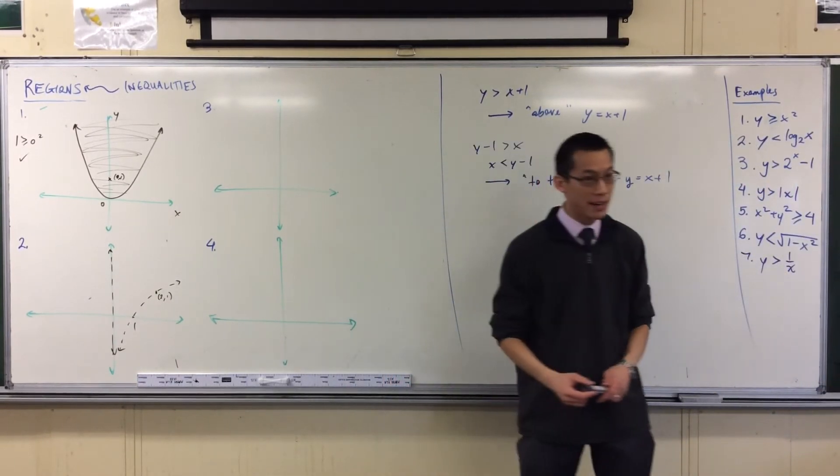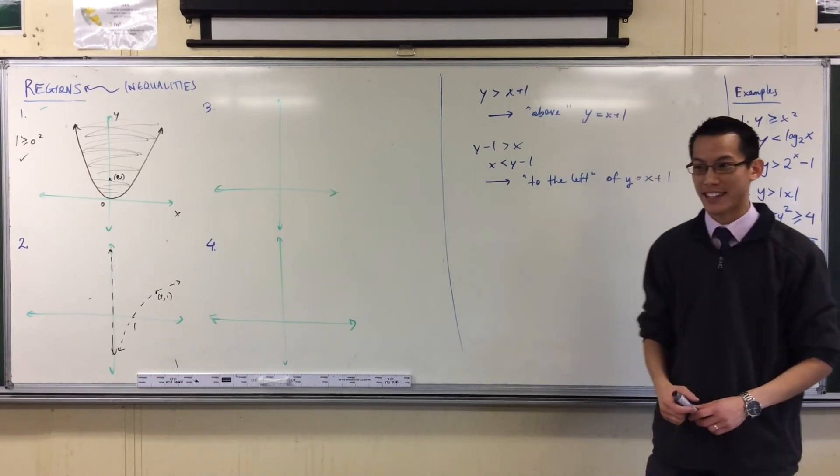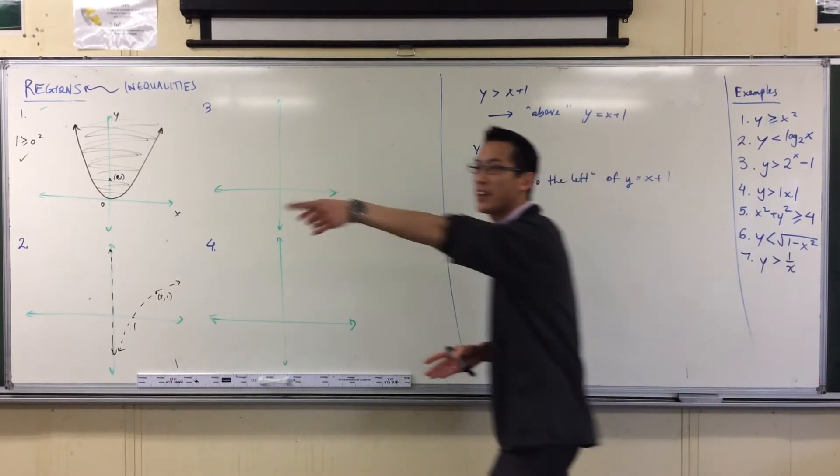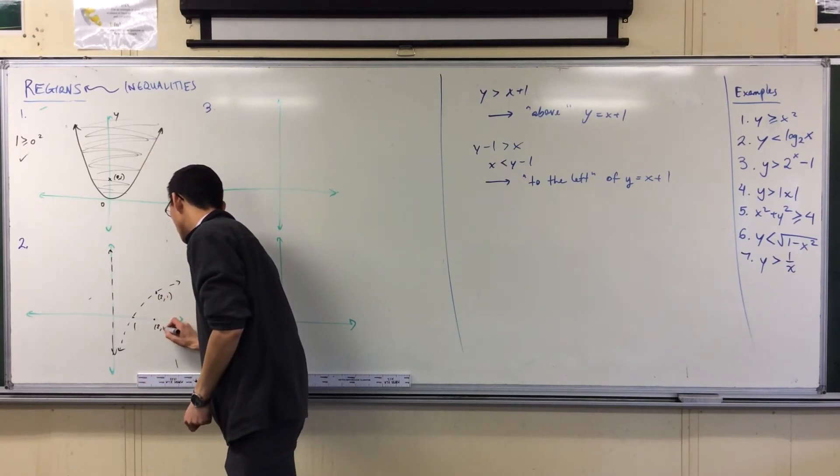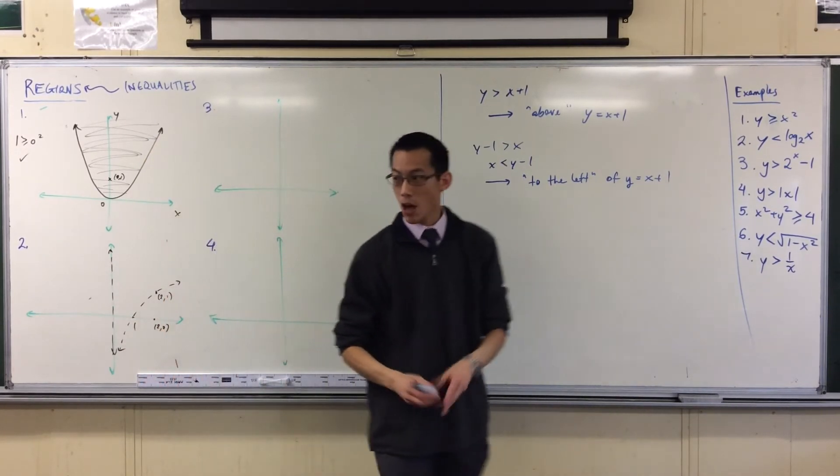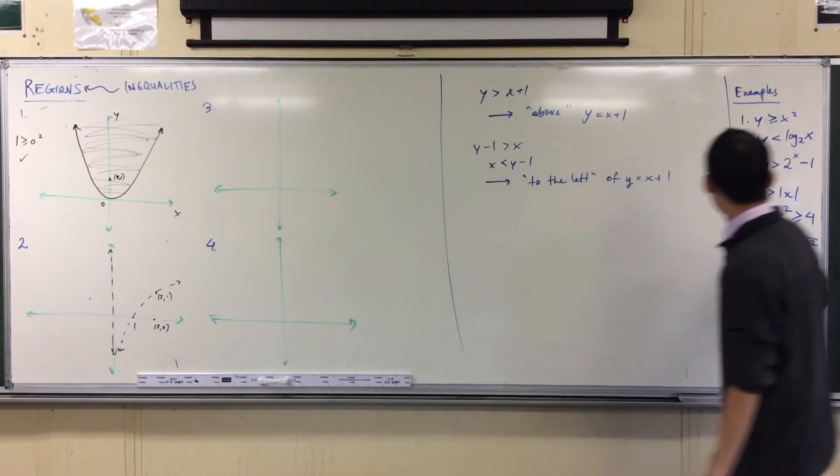What might be a better point to test? Two one. Two one is on the boundary, so it's not a good candidate test because I already know it's not included. One one. Two zero. Two zero. So a point like this: two zero. Why don't we give it a shot? Yes.